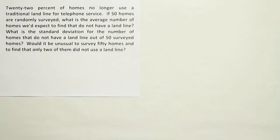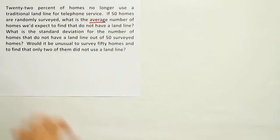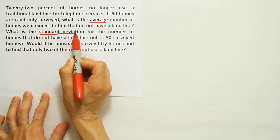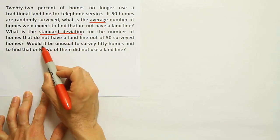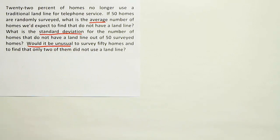This question asks a lot of things. The first thing it asks us is what is the average number of homes we'd expect to find that do not have a landline, so we're looking for the mean. Then it says what is the standard deviation? And then it said would it be unusual? These are all key phrases that indicate what we're supposed to do.